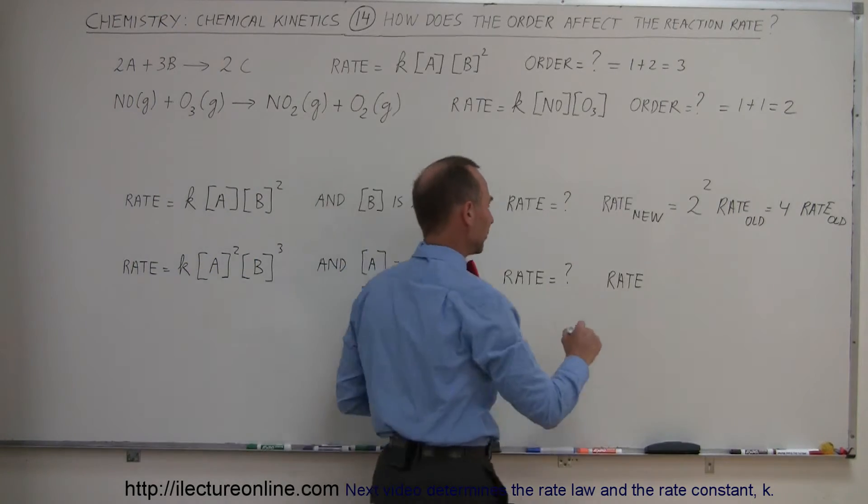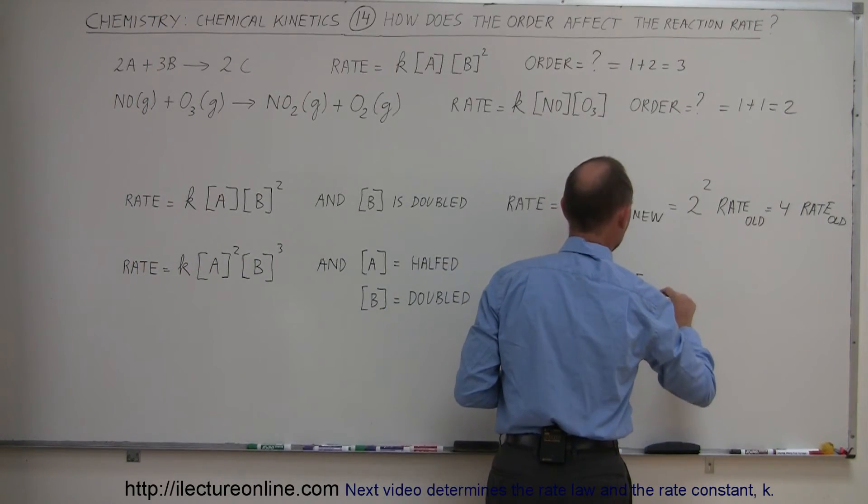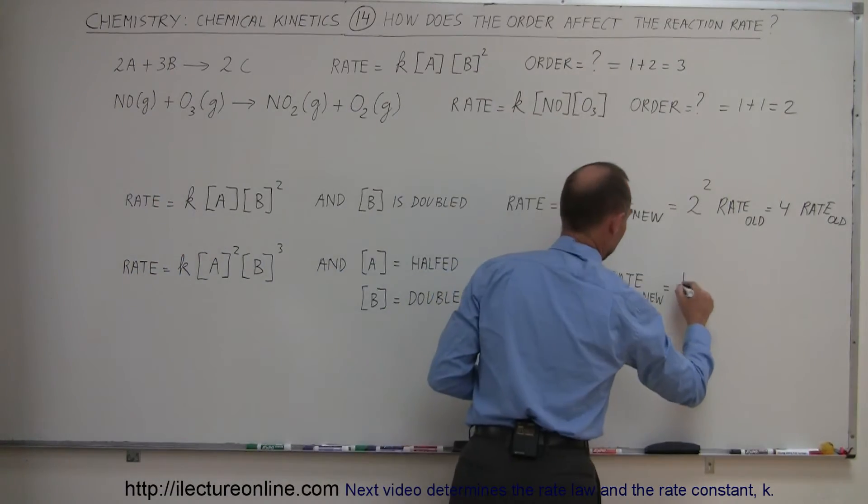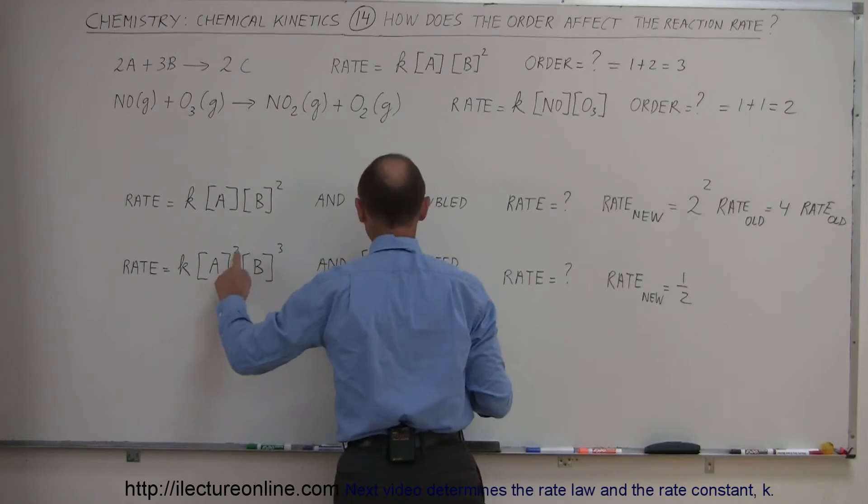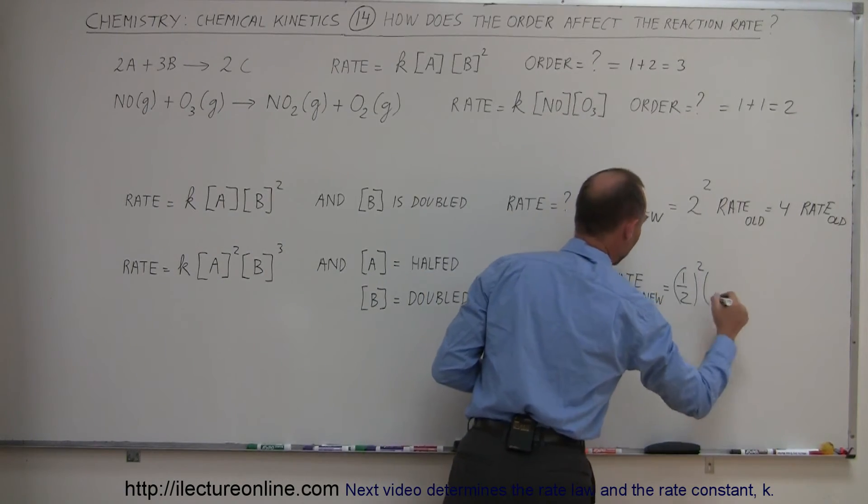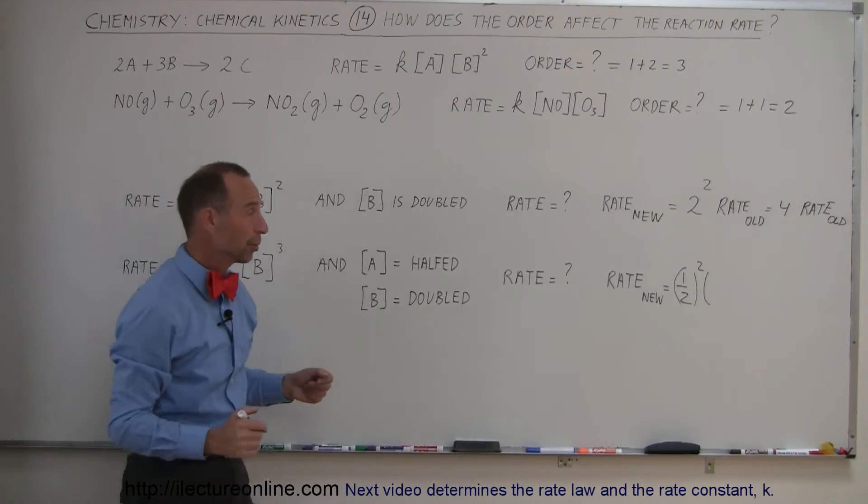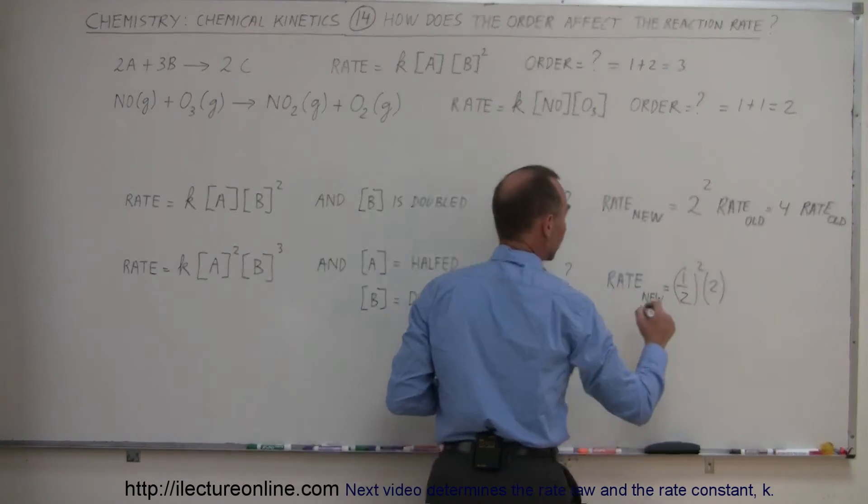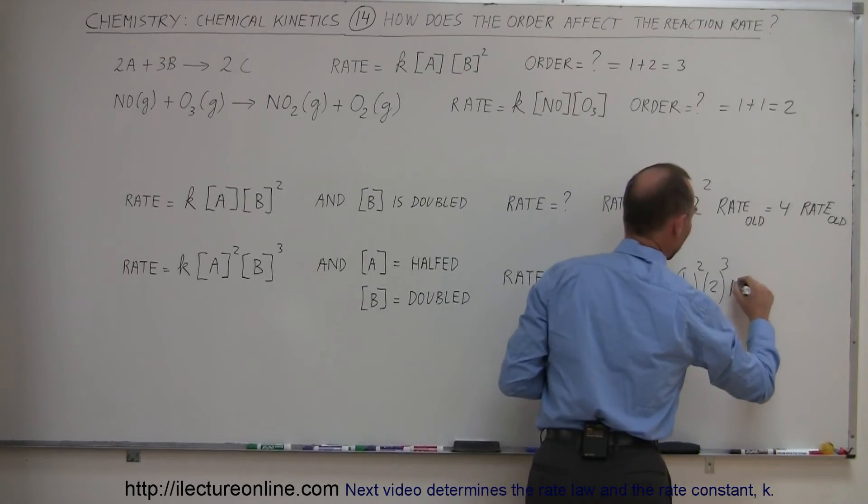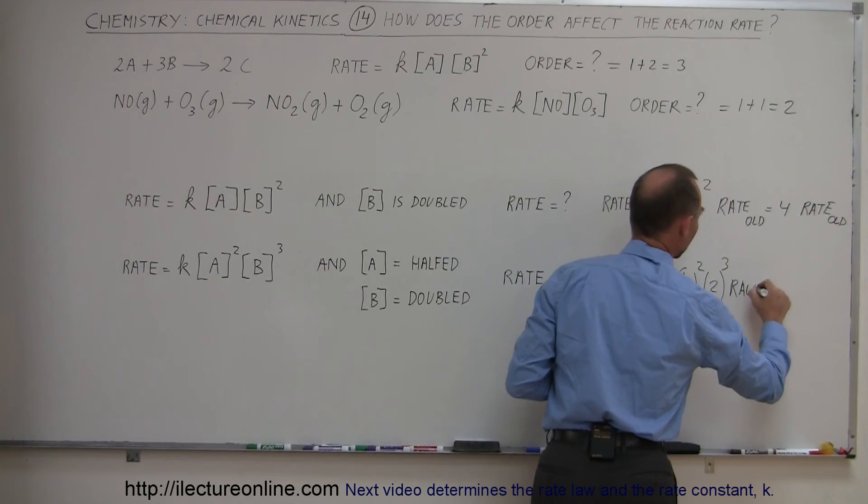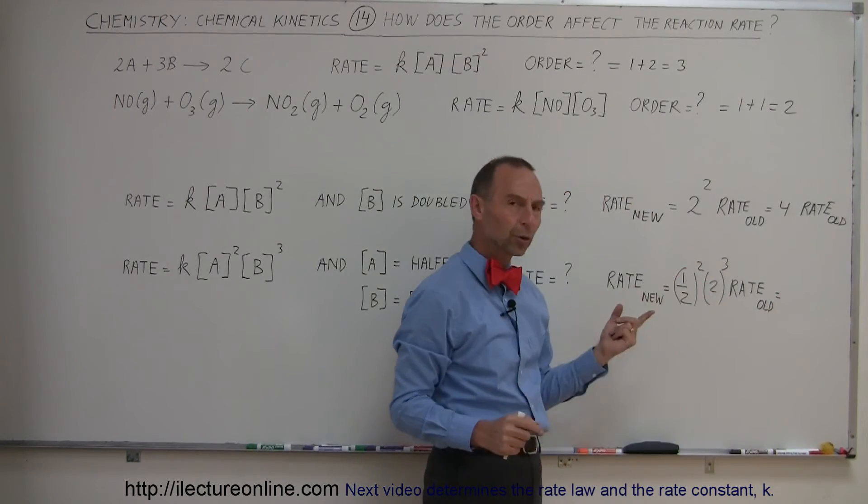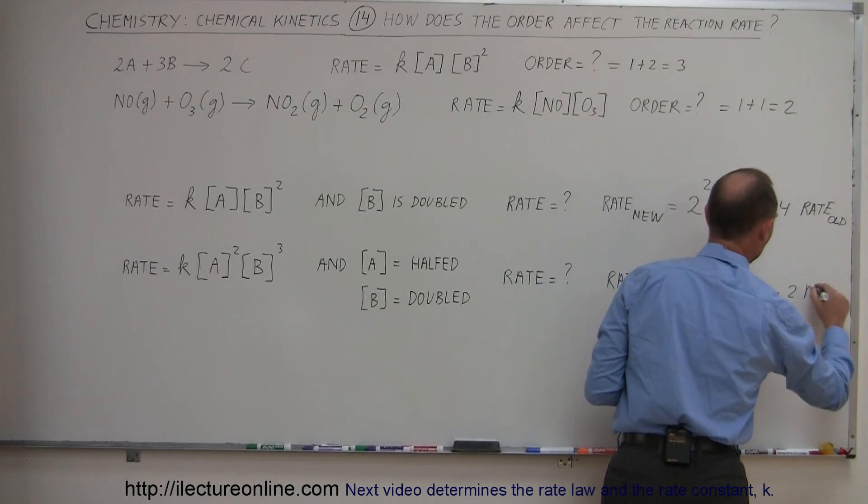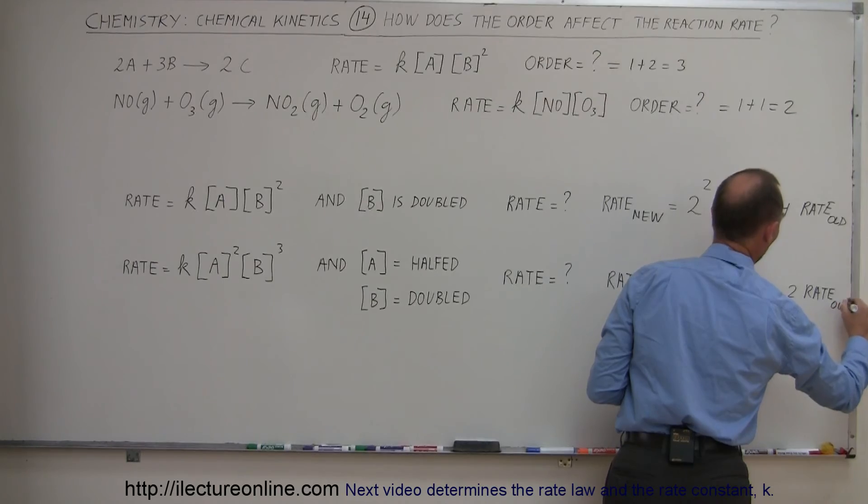Now in this case, we're going to have a new rate, and the new rate is going to be equal to, since we have the concentration of A, we use the 1 half, and the order of A is 2, so it would be 1 half to the second power, times, and we double the concentration of B, so we put a 2 there, and B is cubed, so it's 2 cubed, and so that would be times the old rate. And then we go 1 half squared is 1 quarter, 2 cubed is 8, 8 times the quarter would be twice, so 2 times the old rate.